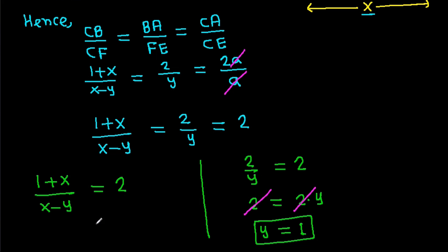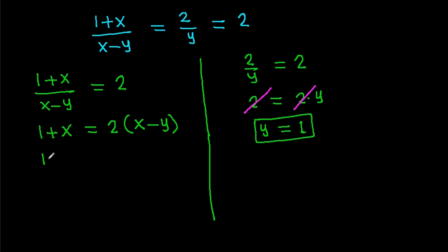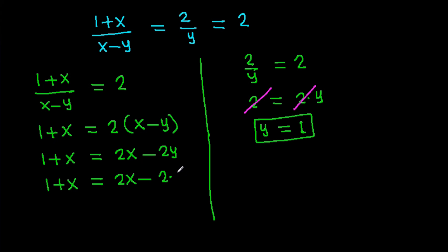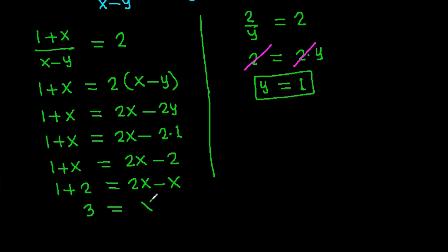Now cross multiplying the other ratio: 1 plus X by X minus Y equals 2, so 1 plus X equals 2 times (X minus Y). That gives 1 plus X equals 2X minus 2Y. Substituting Y equals 1: 1 plus X equals 2X minus 2, so 1 plus 2 equals 2X minus X, therefore 3 equals X. So we get X is 3.